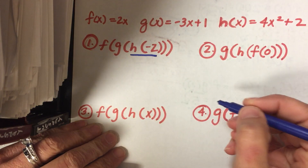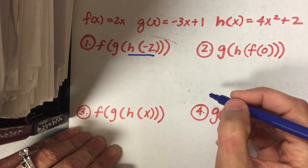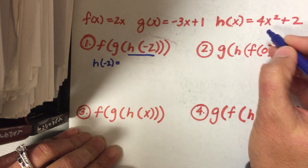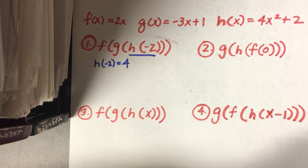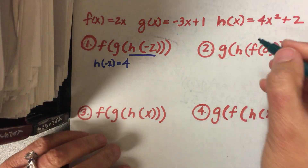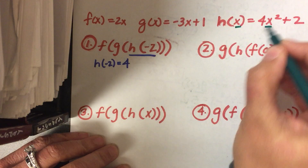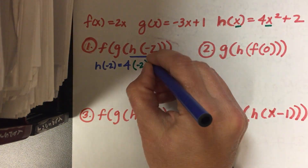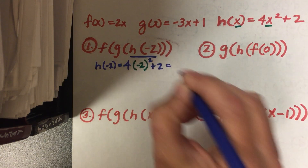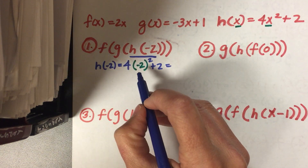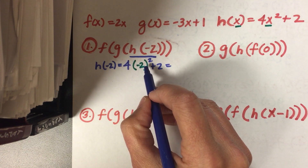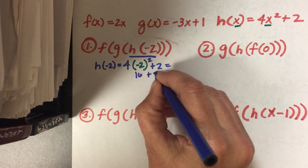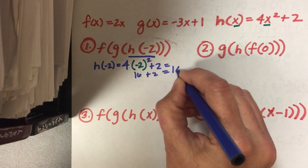Our innermost function is h, so we're going to find h of negative 2. I'm going to make negative 2 my input for h: 4 times negative 2 squared plus 2. Negative 2 squared is positive 4, so I have 4 times 4, which is 16, plus 2, so we get 18.